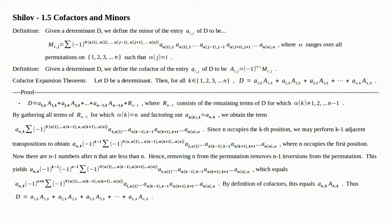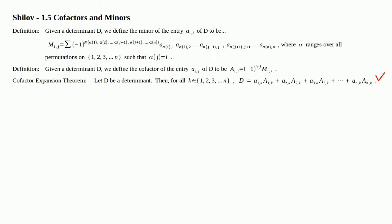Thus, the determinant is equal to what we set out to show. One by one we go through, gather terms, factor out the little a's, and we eventually end up with the determinant as a linear combination of those cofactors — and QED, we're done. So there's the cofactor expansion theorem proved. In the next video, we'll go over how to actually perform calculations using cofactors, and also some other minor properties that make computing determinants easier than they otherwise would be. See you next time.